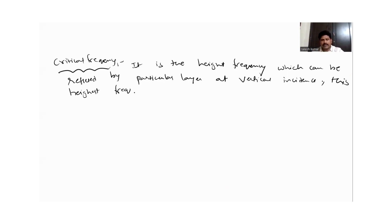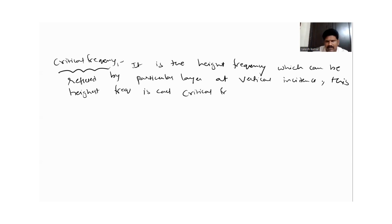The critical frequency of an ionospheric layer is defined as the highest frequency which can be reflected by that particular layer at vertical incidence. This highest frequency is called critical frequency, and it is denoted by Fc.